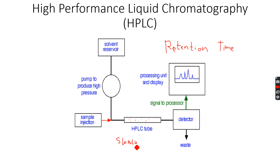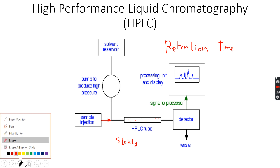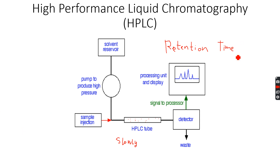Since the non-polar solute is more soluble in the stationary phase, it will travel slowly through the column. Because it is traveling slowly, it takes more time to reach the detector, so the retention time is very high. In summary, for a non-polar solute, RT is very high.